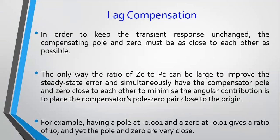Now, in order to keep the transient response unchanged, the compensating pole and zero must be as close to each other as possible. We discussed this when designing the PI controller from the angle perspective: if they're very close together, the angle contributions of the pole and the zero will cancel each other, so your root locus should pass as close as possible to your previous operating point. From a gain point of view, if the pole and zero are very close together, the vectors linking your operating point to them are almost the same length, so they cancel out in the gain calculation.